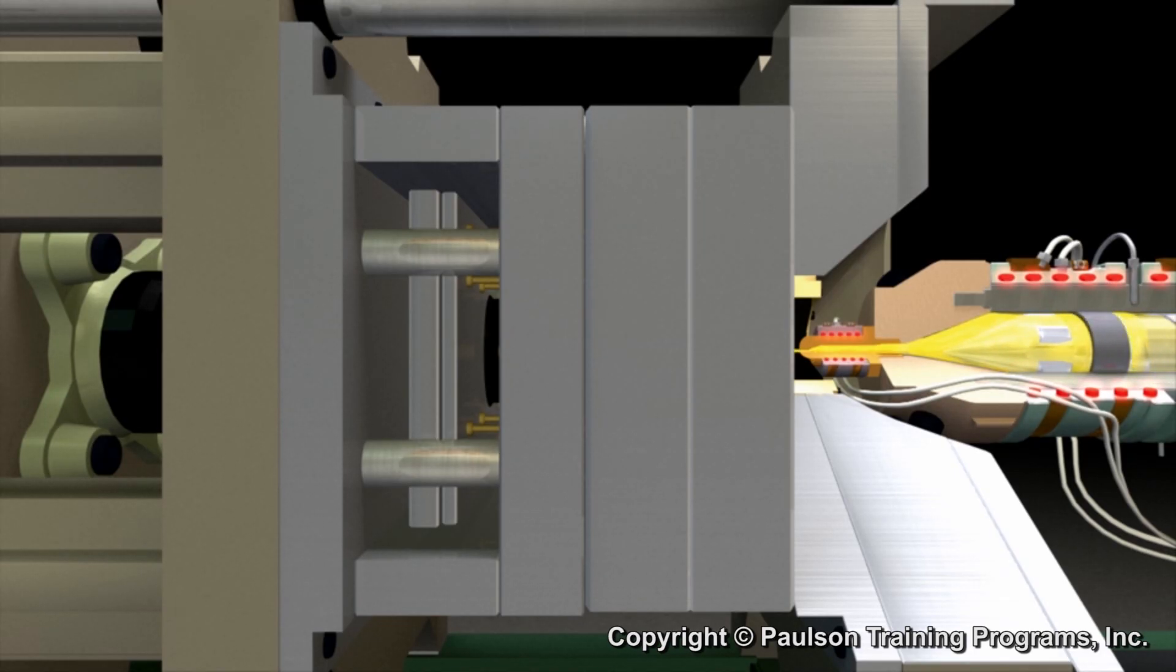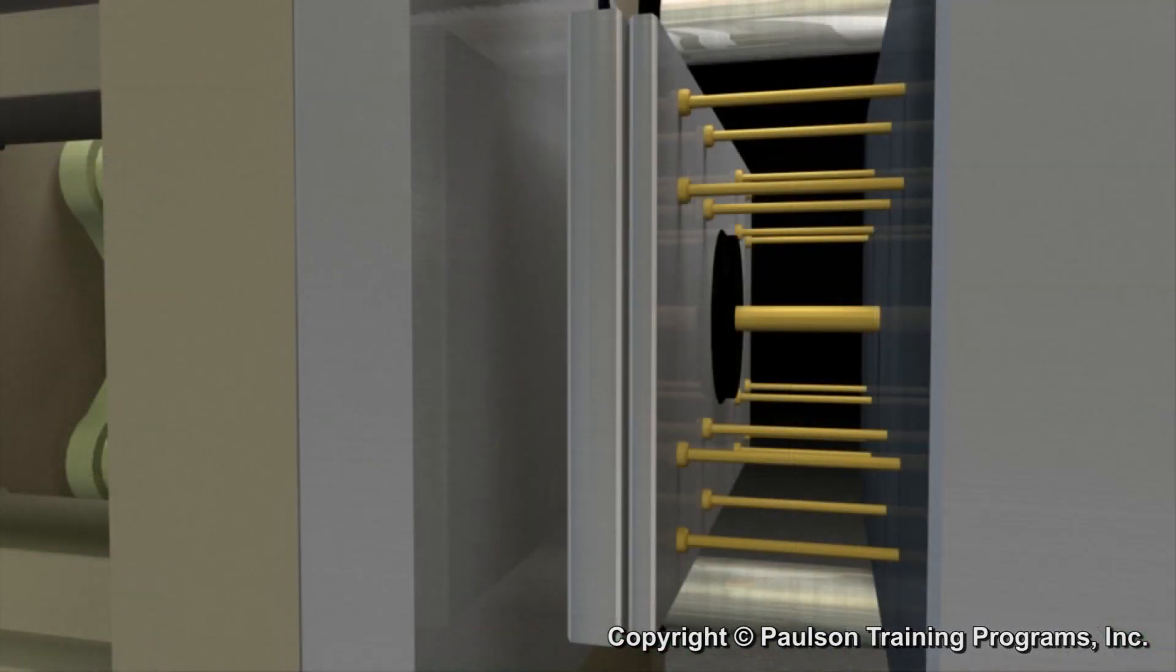At the base of the mold is the ejector housing. The ejector housing is usually bolted to the core retainer plate through the support plate.